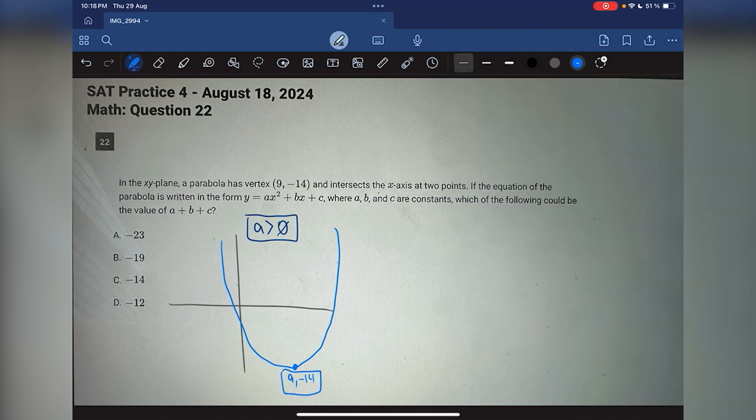So now it says the parabola is written in the form y equals ax squared plus bx plus c, where a, b, and c are constants. Which of the following could be the value of a plus b plus c? We need to find a way to get our equation equal to ax squared plus bx plus c just to get the values of a, b, and c. But the only thing we have here is the coordinates to the vertex. So we need to use vertex form. We need to equal vertex form to standard form. So vertex form is actually y equals a times x minus h squared plus k, where h, k is the vertex. So we're to plug in 9, negative 14. It will look like this. y equals a times x minus 9 squared minus 14.